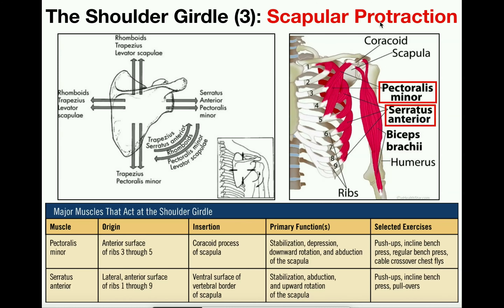The first topic we'll discuss is scapular protraction, using a figure of the scapula. Moving in the rightward direction away from the midline represents scapular protraction. Two major muscles are involved: the serratus anterior, which most consider the more important one, and the pectoralis minor. Scapular protraction typically occurs when you bring your arm or humerus in front of the frontal plane, as seen in a bench press or throwing a punch — anything that brings your arm really in front of your body.